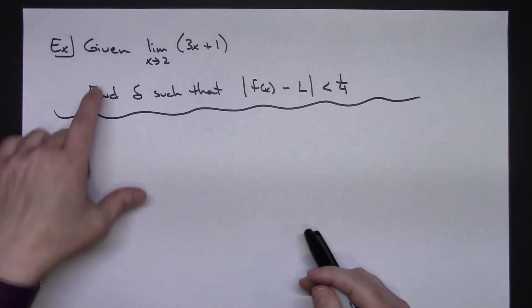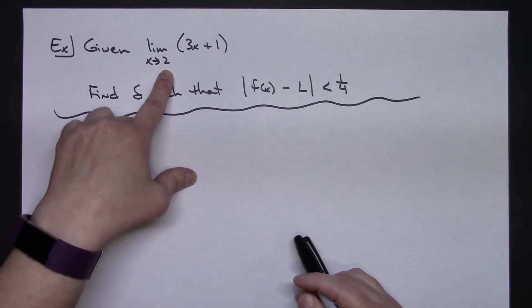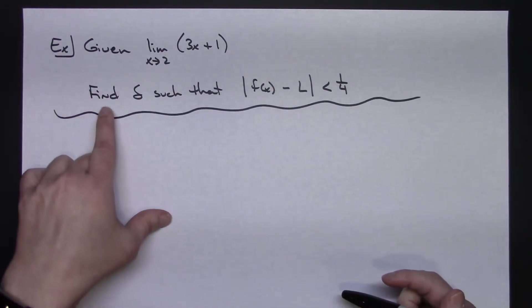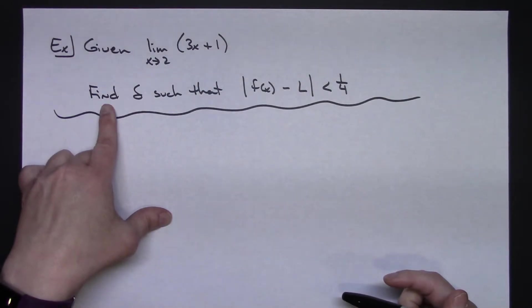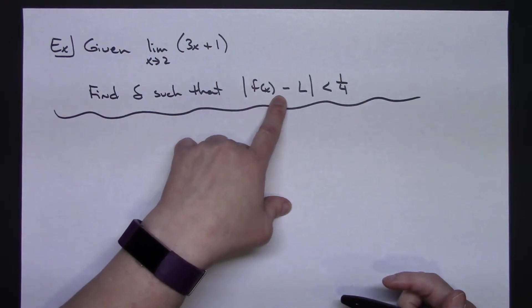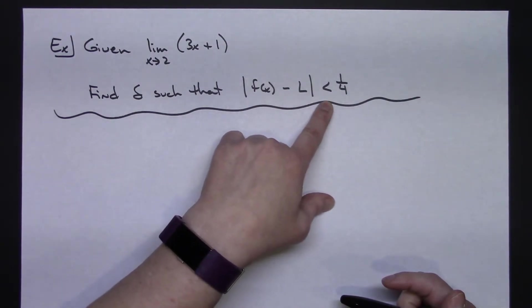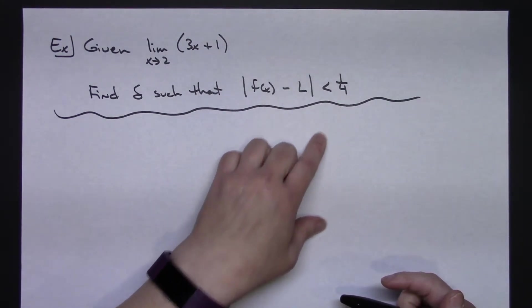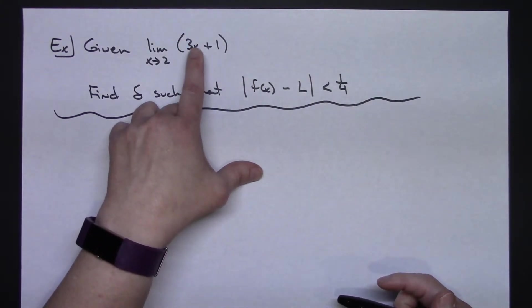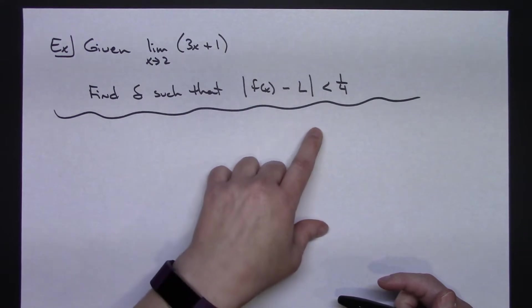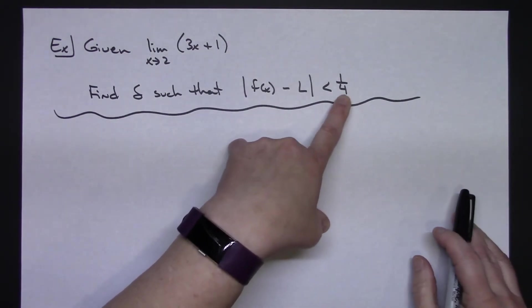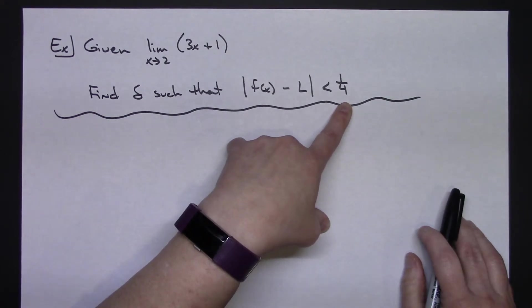Let's say that we are given the limit as x approaches 2 of 3x plus 1. It's going to ask us to find delta such that the absolute value of f of x minus L is less than 1 fourth. So this would be my limit value. So we're going to have to calculate that right there. And this value here, this setup here, if you remember from the definition, this value would be my epsilon value here.